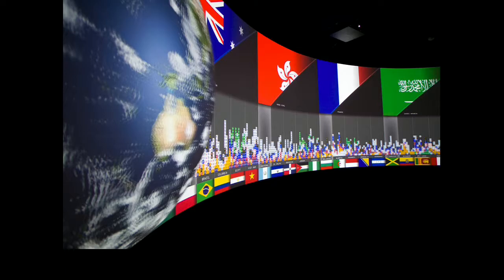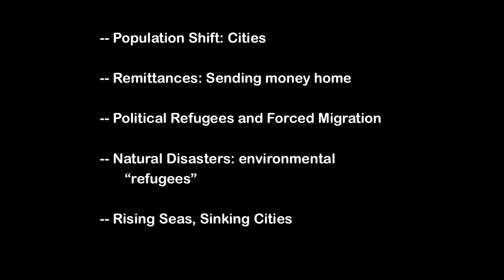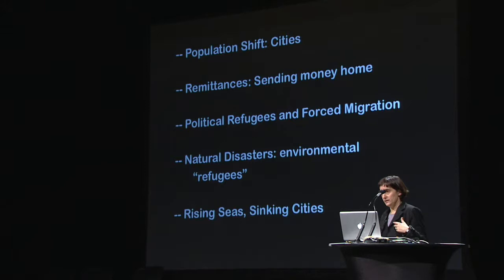There were six scenarios in which we expanded upon Virilio's concepts: population shift, cities, remittances — sending money home — political refugees and forced migration, natural disasters or environmental refugees, rising seas and sinking cities, and on its way to Copenhagen, a scene called Speechless about endangered language and deforestation.